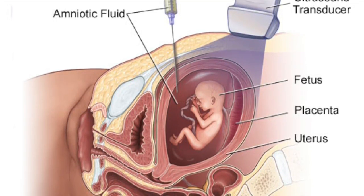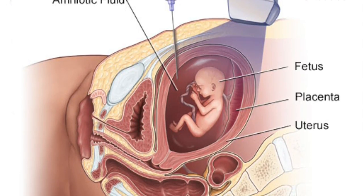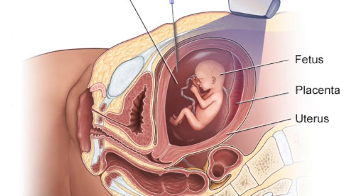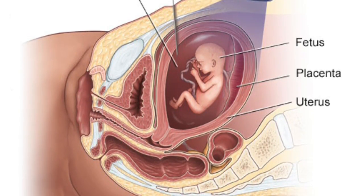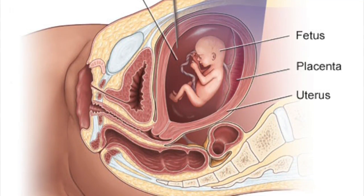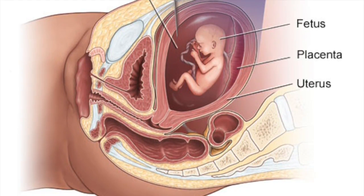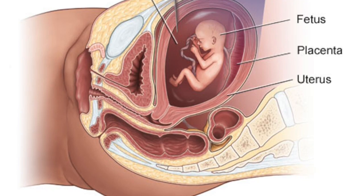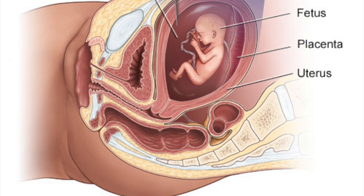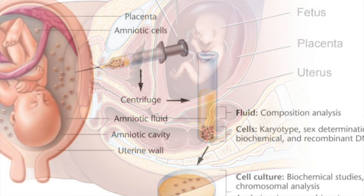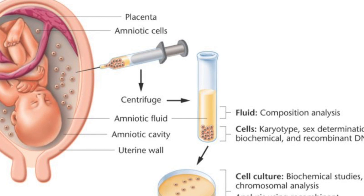In that amniotic fluid we have baby cells. We all shed cells from our body, and the baby also sheds cells, so those cells are found in the amniotic fluid. We take the fluid and extract the cells from it because we are concerned with checking for abnormalities in the baby.